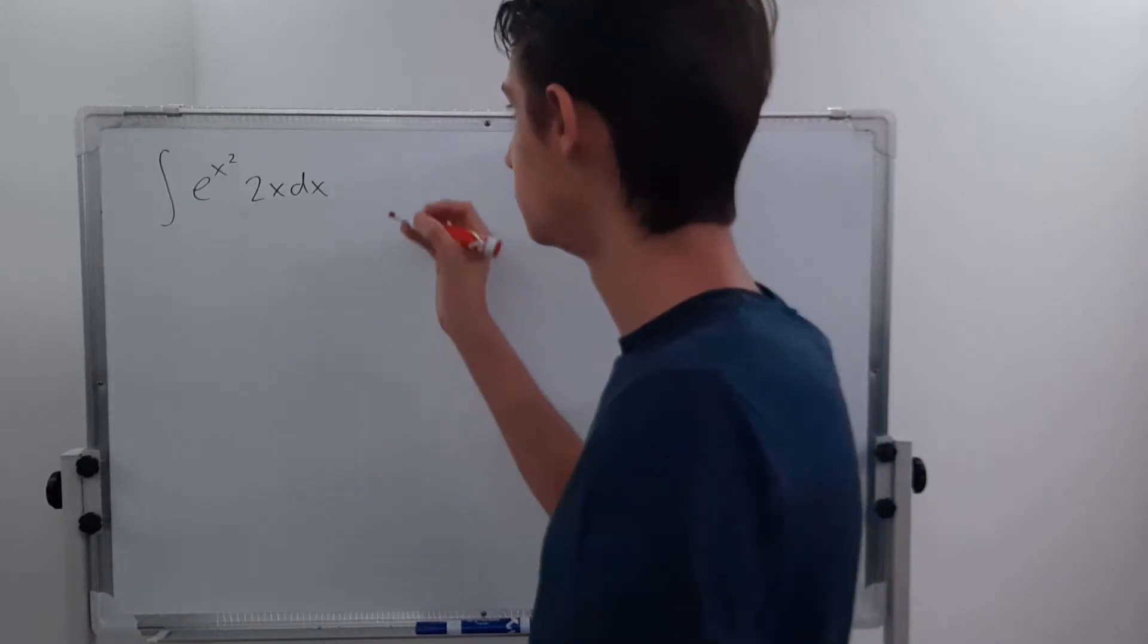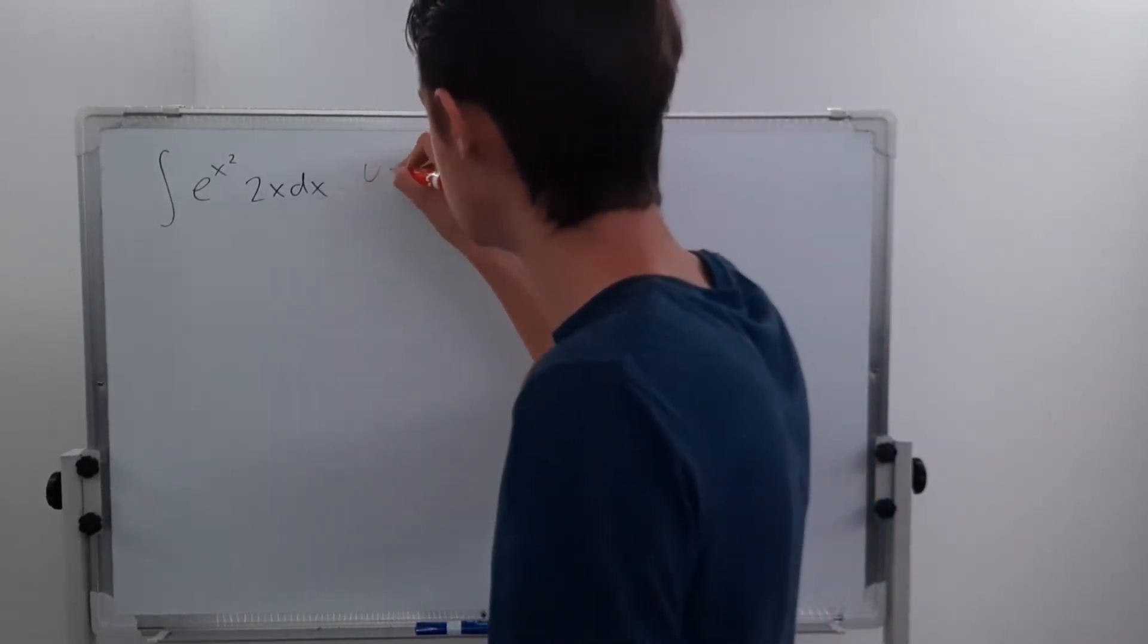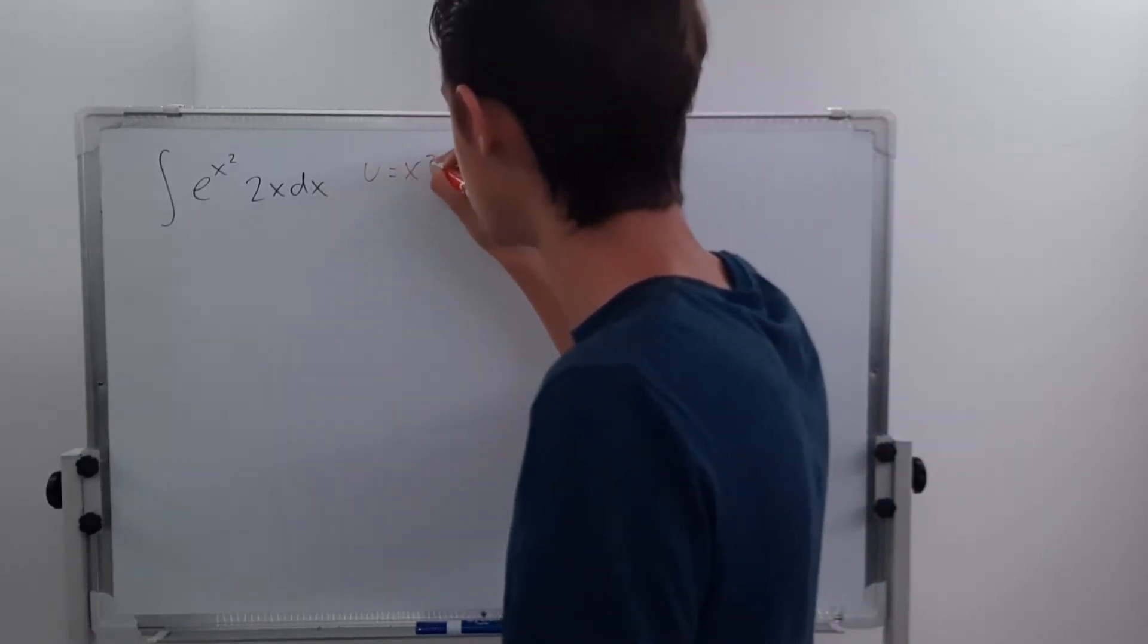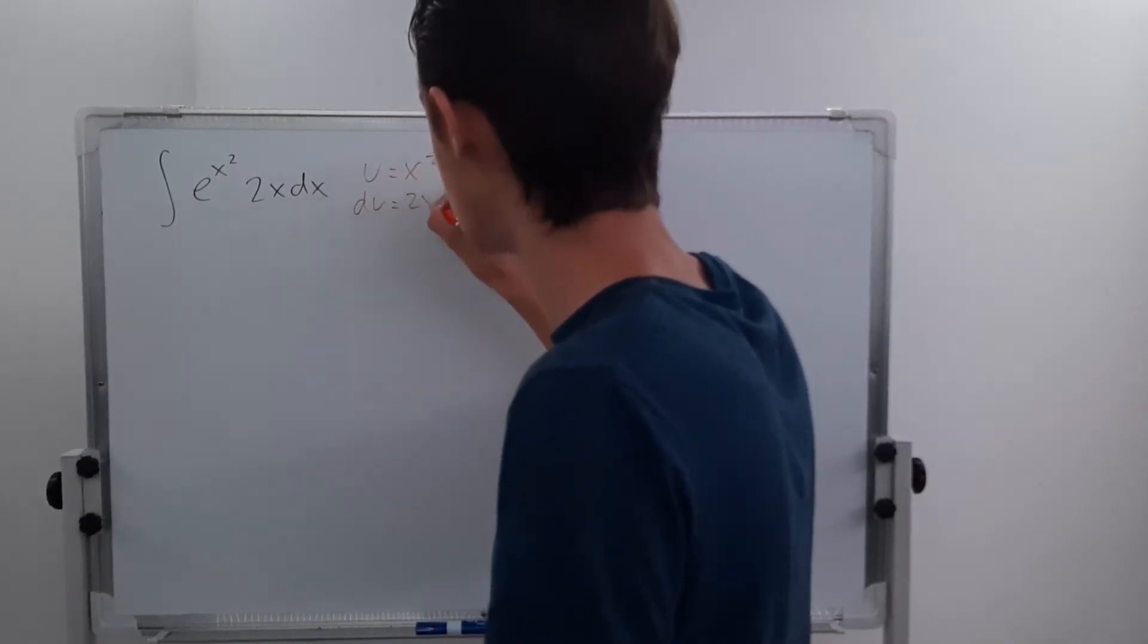So traditionally, the way you do this is you'd set u equal to x squared, and then du is equal to 2x dx.